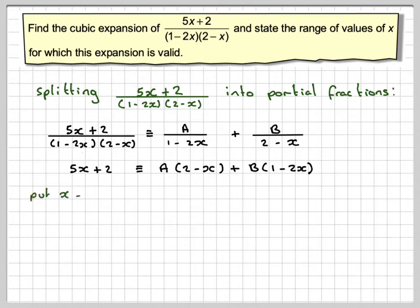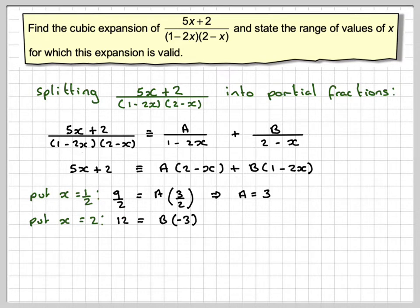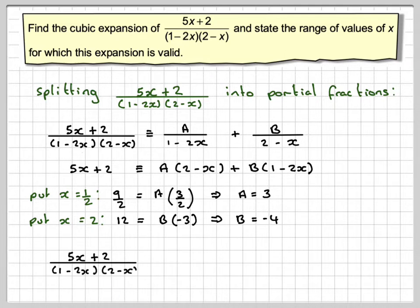Putting x = 1/2 makes the B term zero. So 5(1/2) + 2 = 9/2, and A(2 - 1/2) = A(3/2), giving A = 3. Putting x = 2 makes the A term zero. So 5(2) + 2 = 12, and B(1 - 4) = -3B, giving B = -4. Therefore the fraction is 3/(1 - 2x) - 4/(2 - x).